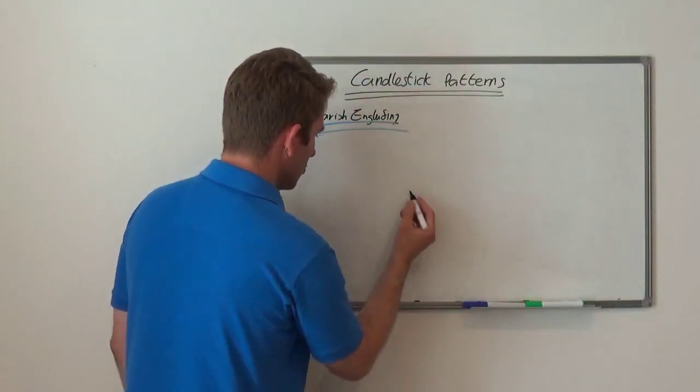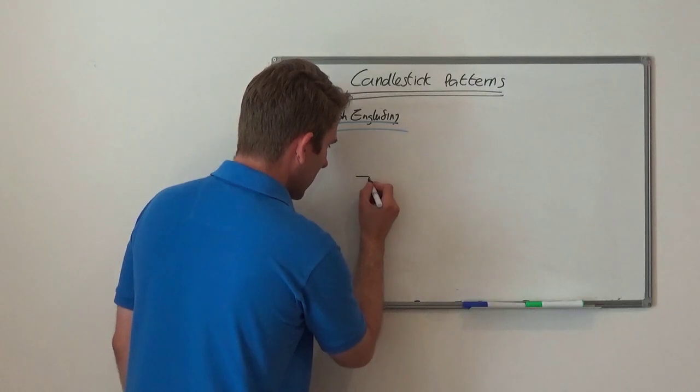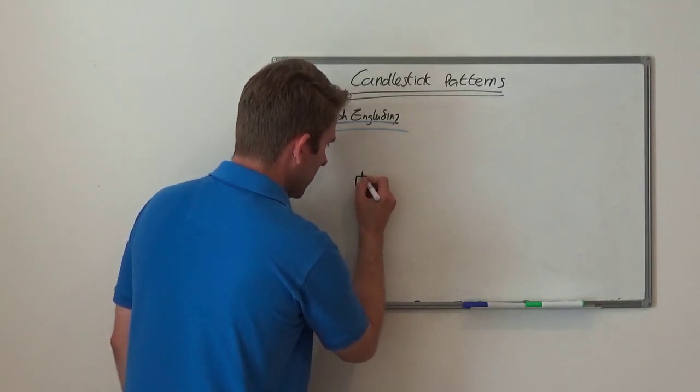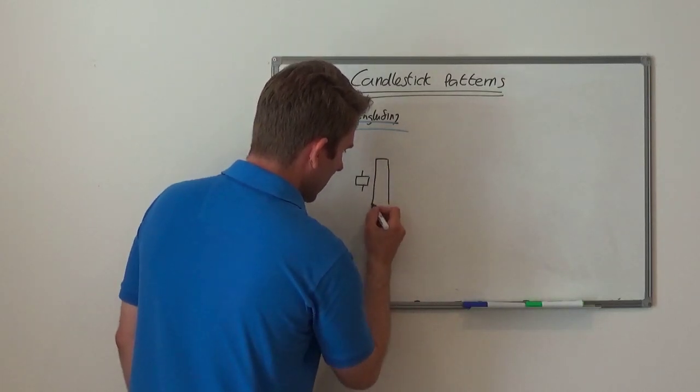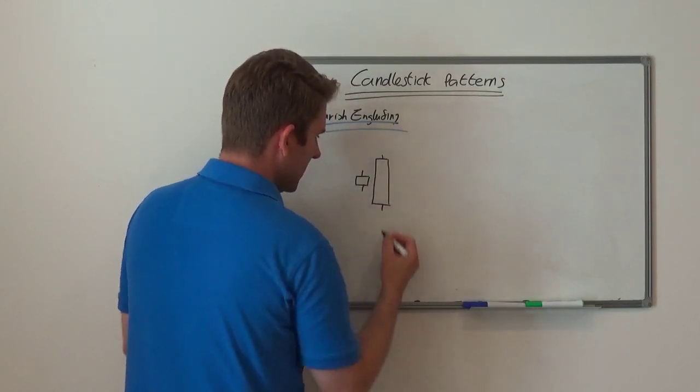The idea is that we have a little candle here that could be a green candle or whatever it may be, and this here is the second candle, this is the bearish engulfing candle.